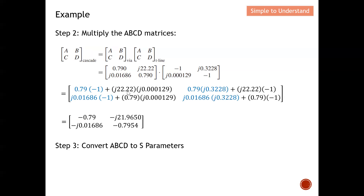For the B term: 0.790 multiplied by j0.3228, plus j22.22 multiplied by minus 1. For the C term: j0.016686 multiplied by minus 1, plus 0.790 multiplied by the corresponding term. For the D term: j0.01686 multiplied by j0.3228, plus 0.790 multiplied by minus 1. Using the app shown in Part 7, you can easily calculate these overall ABCD parameters.